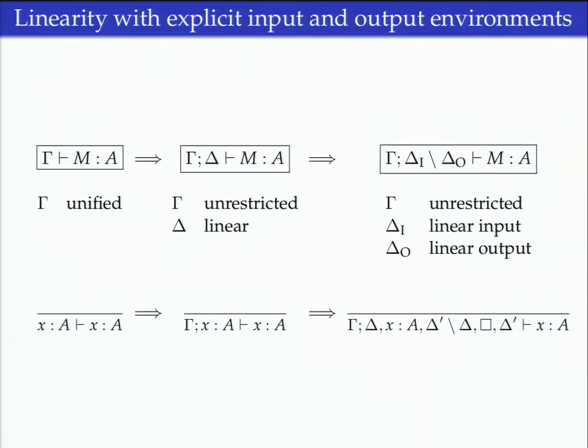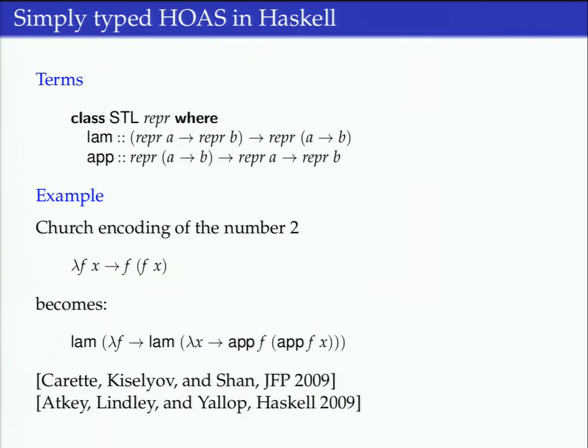The way to read this is: gamma are just unrestricted variables so we don't care about how they get duplicated, but the delta-I is the variables you have before your judgment, and the delta-O are the variables after you've consumed them. For the variable rule, we can have a whole load of other variables in the context as long as they stay the same on the right-hand side, and when we consume a variable we mark it with a box.